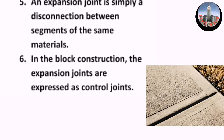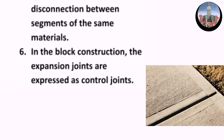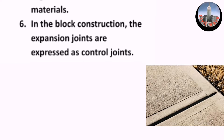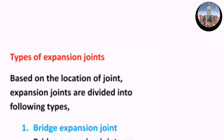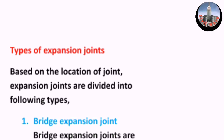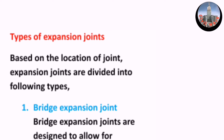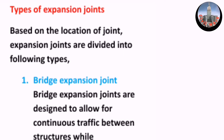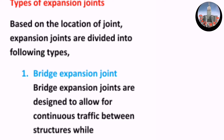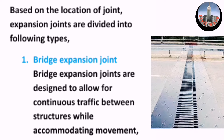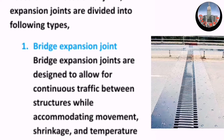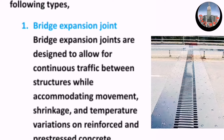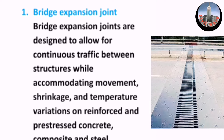Six, in block construction, the expansion joints are expressed as control joints. Types of expansion joints: based on the location of joint, expansion joints are divided into the following types. One, bridge expansion joints — bridge expansion joints are designed to allow for continuous traffic between structures.